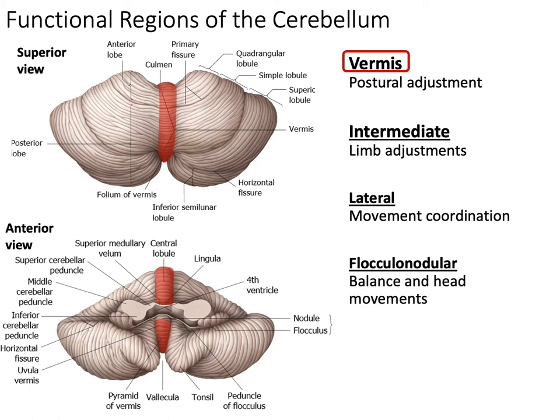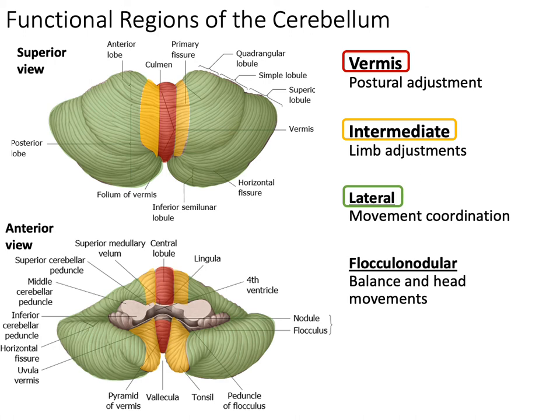Lateral to the vermis, we have the intermediate region, which is associated with limb adjustment. And just lateral to that, you have the lateral region, which is associated with motor movement, motor memory, and motor coordination.